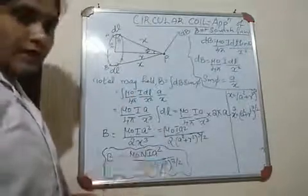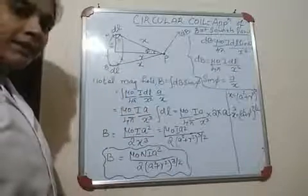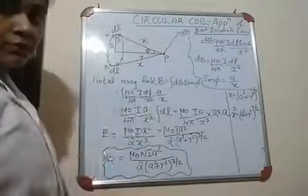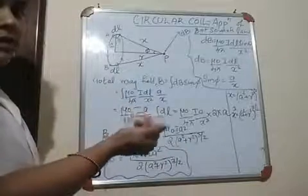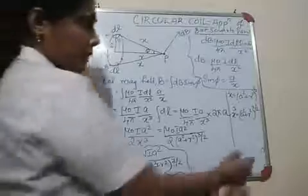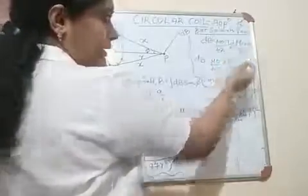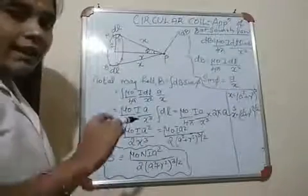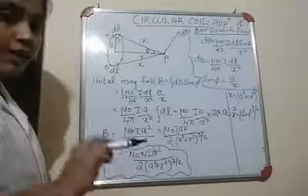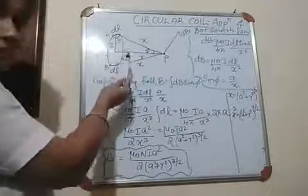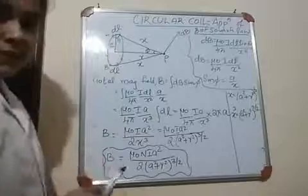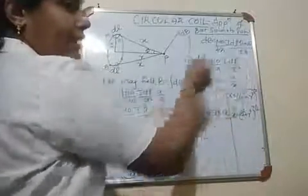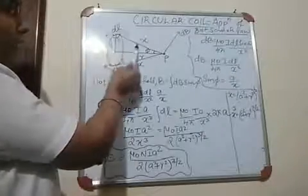This will be the direction of the magnetic field at point P due to length element DL. To detect the direction, just use the right-hand rule: curl your fingers from DL to X. According to Biot-Savart's law, DB equals μ₀/4π · I·DL·sinθ / R². Here, the distance between the length element DL and point P is x, not r, so we need to consider x², not r². Theta is the angle between DL and x, so curl your fingers from DL to x to get the direction of the magnetic field.